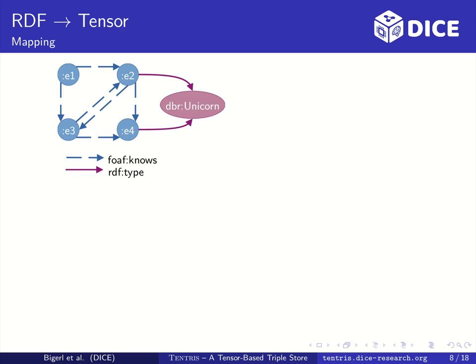Now that we have refreshed our knowledge on tensors, I will present the details of Tentris. We will see the mapping of an RDF graph to a tensor, how we store the tensor as a HyperTrie, the mapping from SPARQL to slices and Einstein summation, and I will shortly outline how we process the Einstein summation.